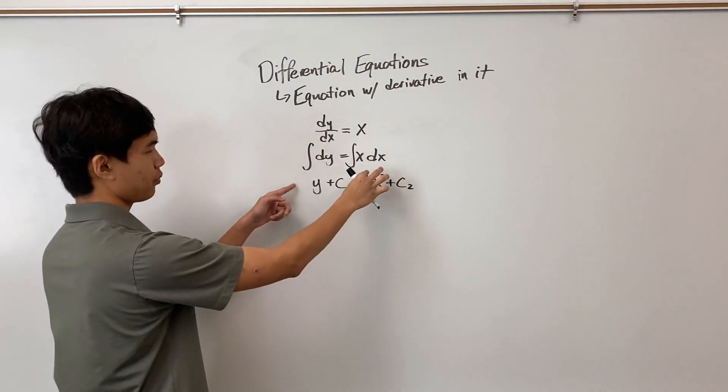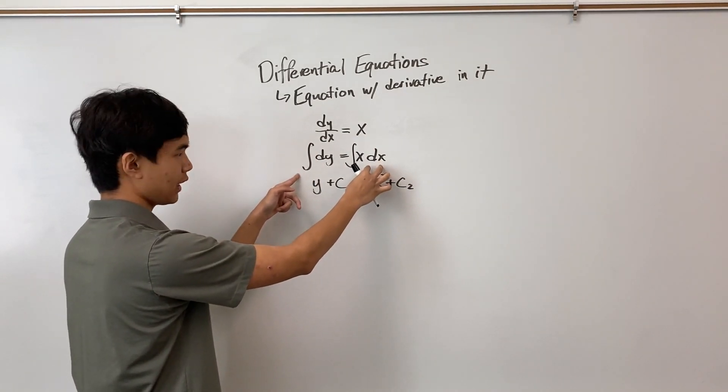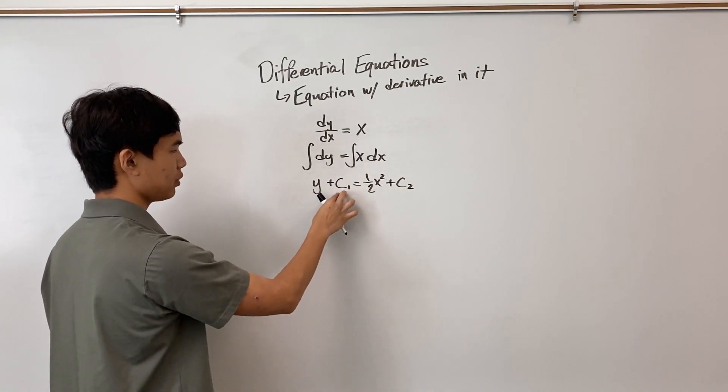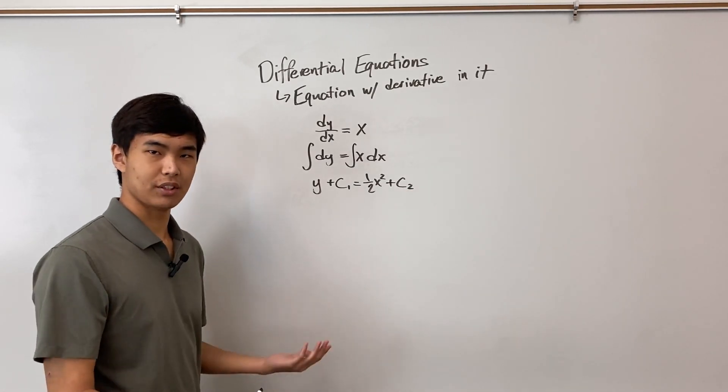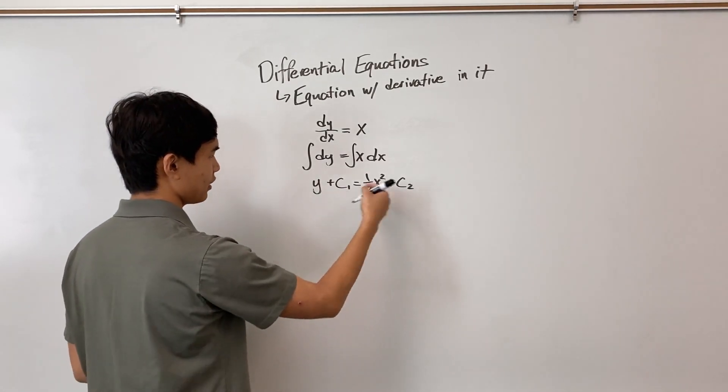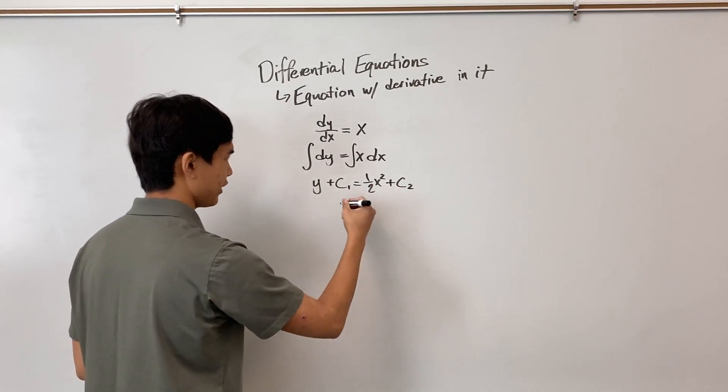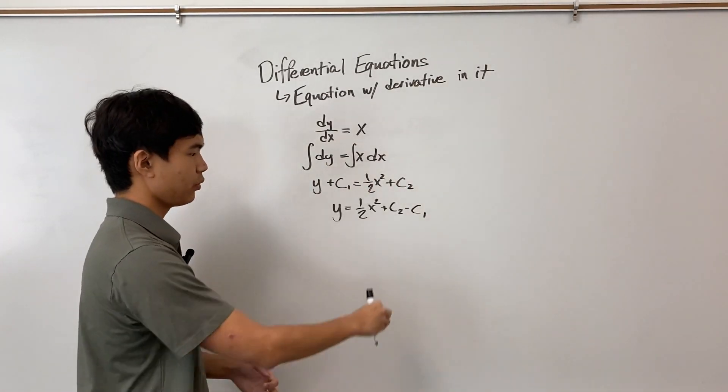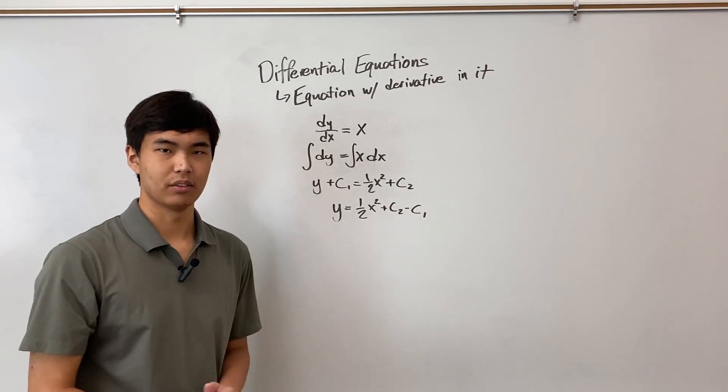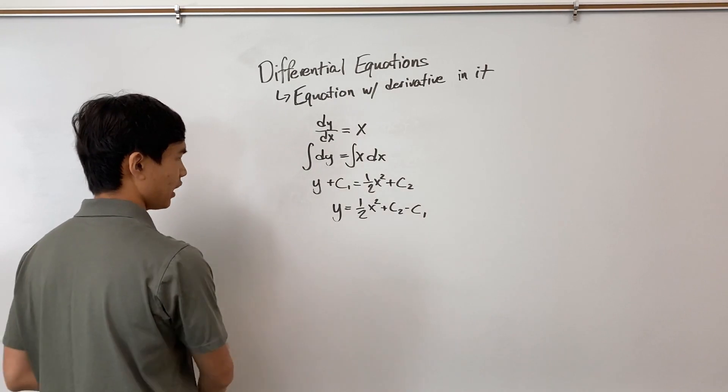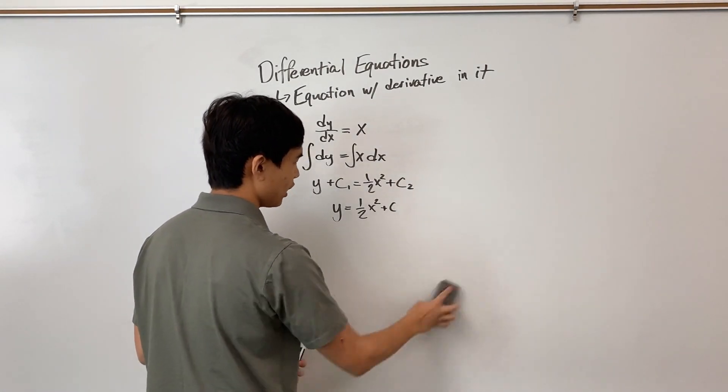And so we perform the indefinite integral on both sides. So we have a plus c here and a plus c here. And since we're still solving for y, I'm going to isolate by moving the c1 over to here. Now notice, we have some arbitrary constant minus another arbitrary constant, which we can just simplify to one constant.